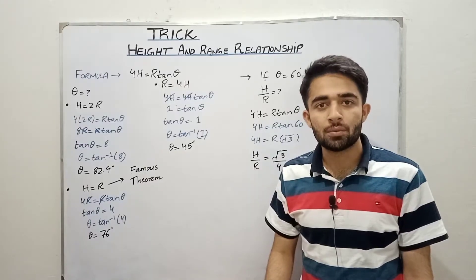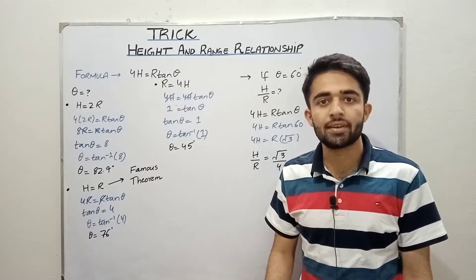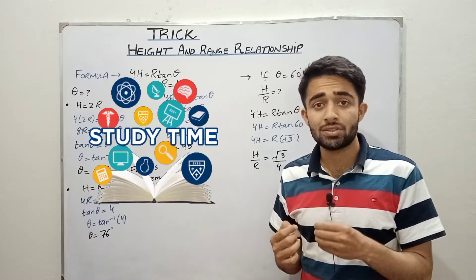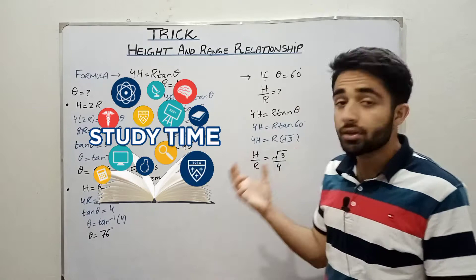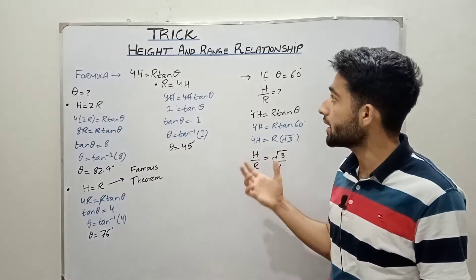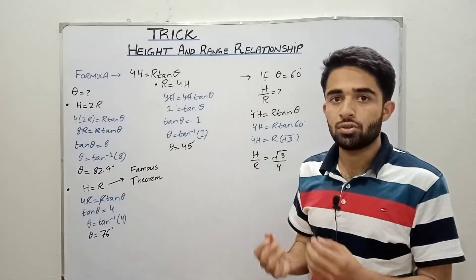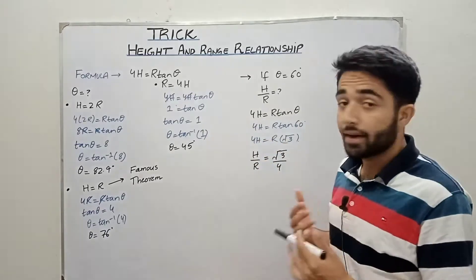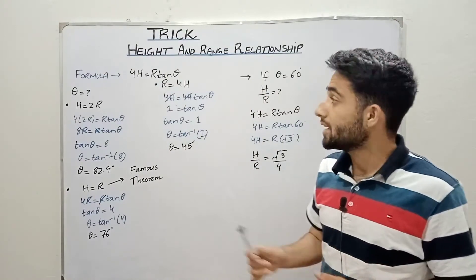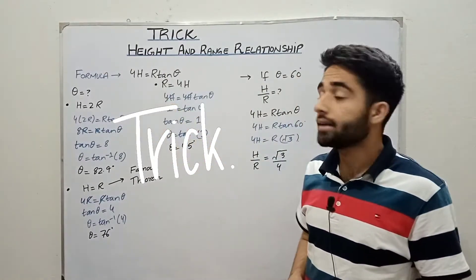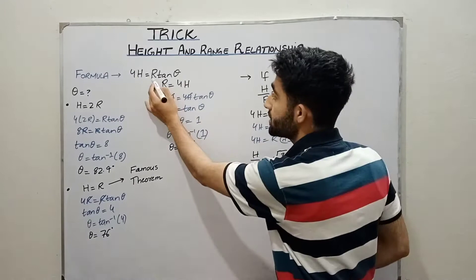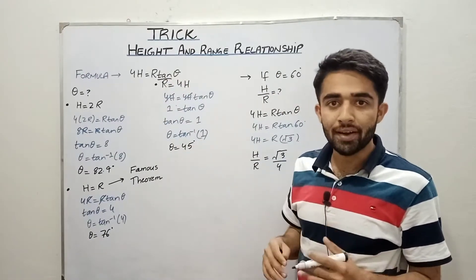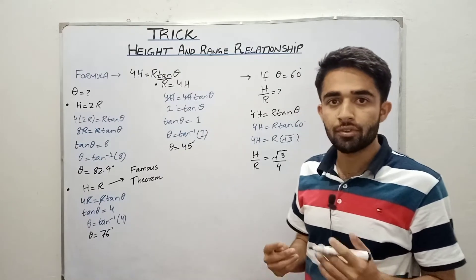Assalamu alaikum guys, my name is Abdul Hanan and you are watching Study Wali Class. In this lecture we are going to study a very important trick about the height and range relationship. The formula we use is: 4 times height equals range times tan(θ). From this formula, we can find one quantity if we know the other two.